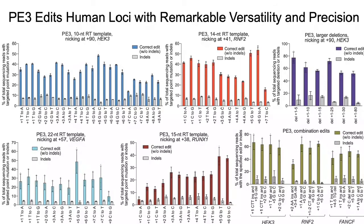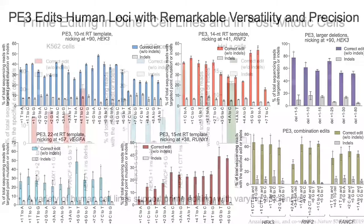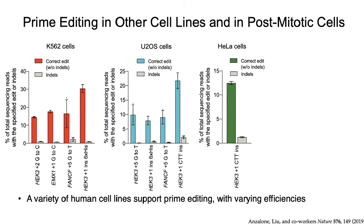While the data in the previous slide was from HEK293T cells, the cells in which we developed prime editing, other cell types—even including post-mitotic primary cortical neurons—can also support prime editing, albeit with varying efficiencies that are generally lower than in HEK293T cells. In collaboration with Britt Adamson's lab at Princeton, we recently performed a large-scale screen to identify cellular determinants of prime editing efficiencies, with some exciting new insights and improved prime editing systems that we hope to report soon.